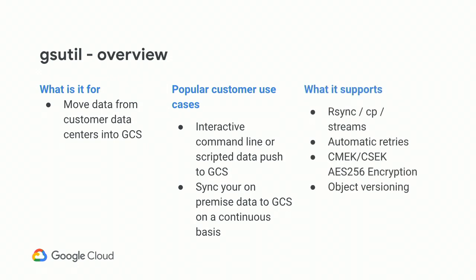In addition to continuous sync and copy modes, GSutil also supports streaming: if you have a Unix command you're running, you can pipe it to GSutil and it will stream the output to a GCS object. Under the covers, it supports automatic retries, encryption, and GCS object versioning. GSutil has a lot of options — I'll go through a few that customers find most useful.